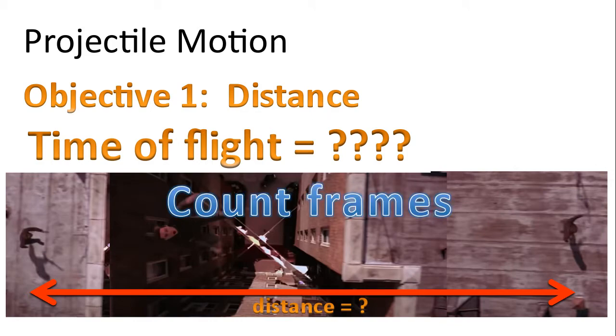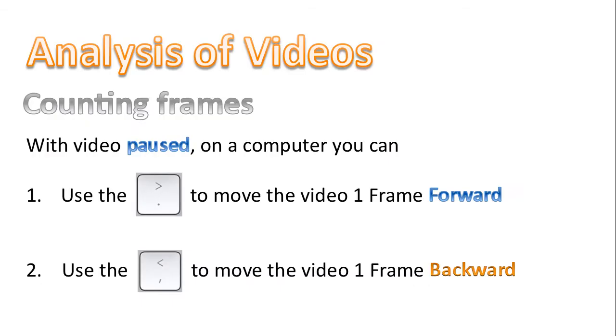Well we're going to count the number of frames. Now if you're watching this video on YouTube and you have a computer, with the video paused you can use the period key to move the video one frame forward, or you can use the comma key to move the video one frame backward. But it's important that when you do this initially the video has to be paused.